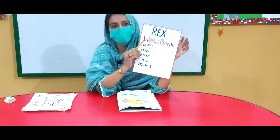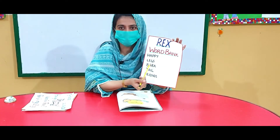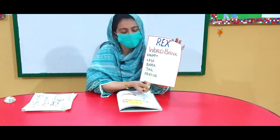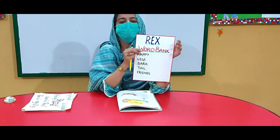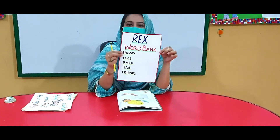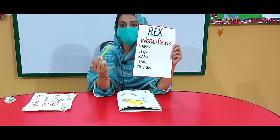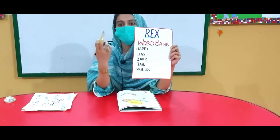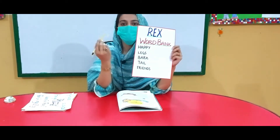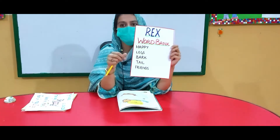The word bank for this lesson includes: happy, legs, bark, tail, and friends — F-R-I-E-N-D-S. The second task of the day is to write these words, repeat them again and again, and memorize them. These are the difficult words you need to learn to build up your vocabulary. So the second task is writing the word bank of this lesson and learning them.